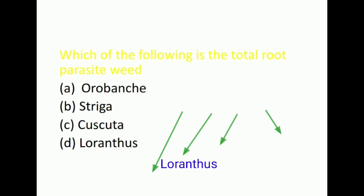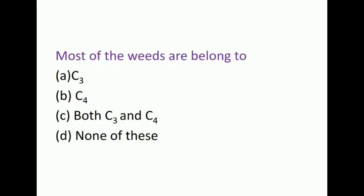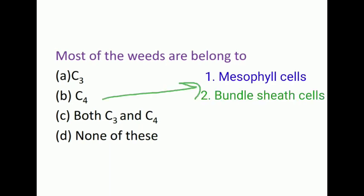The next question is: Most of the weeds belong to? The options are C3, C4, both C3 and C4, and none of these. The correct answer is C4. The simple difference between C3 and C4 plants is in C3 plants the carbon dioxide fixation takes place only at one place, whereas in C4 plants the carbon dioxide fixation takes place twice, that is one in mesophyll cells and second in bundle sheath cells.